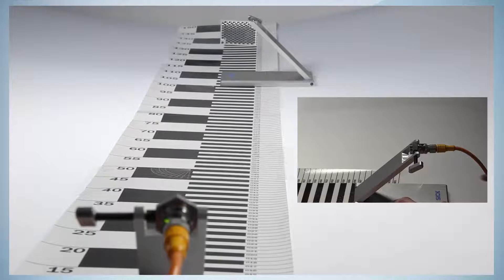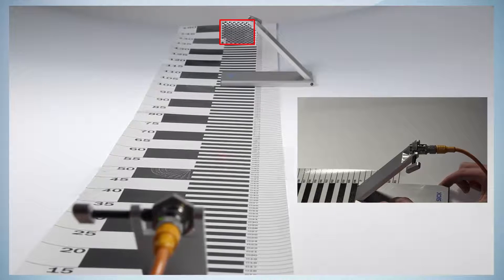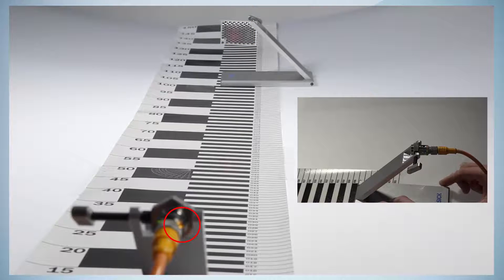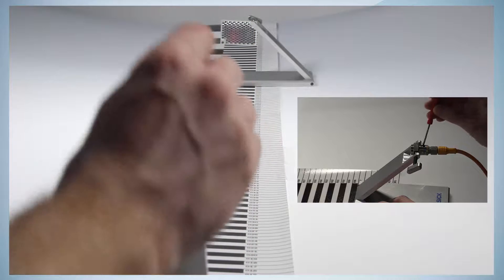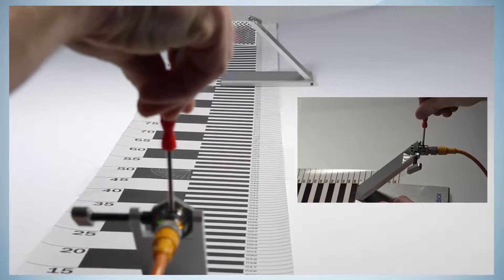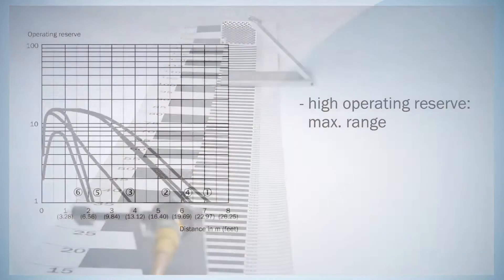During installation, make sure that the light spot is aligned in the center of the reflector. The orange indicator LED will light up continuously if the sensor is aligned correctly. If the sensor includes an adjustment possibility, for example using a potentiometer, adjust the sensor according to your application.